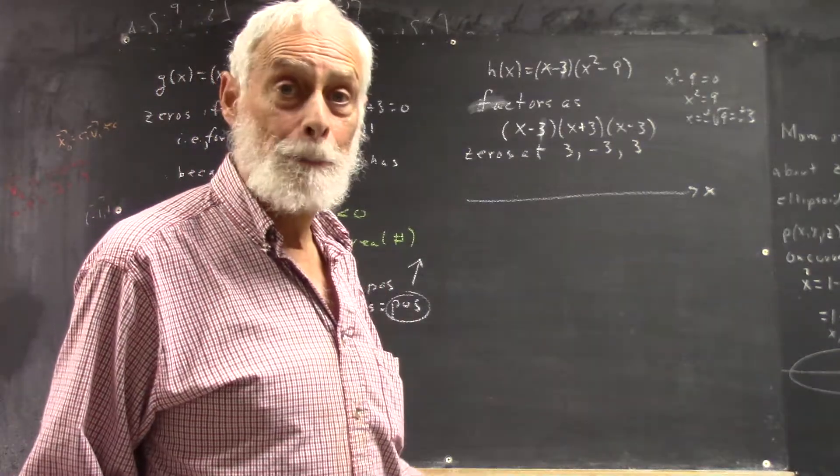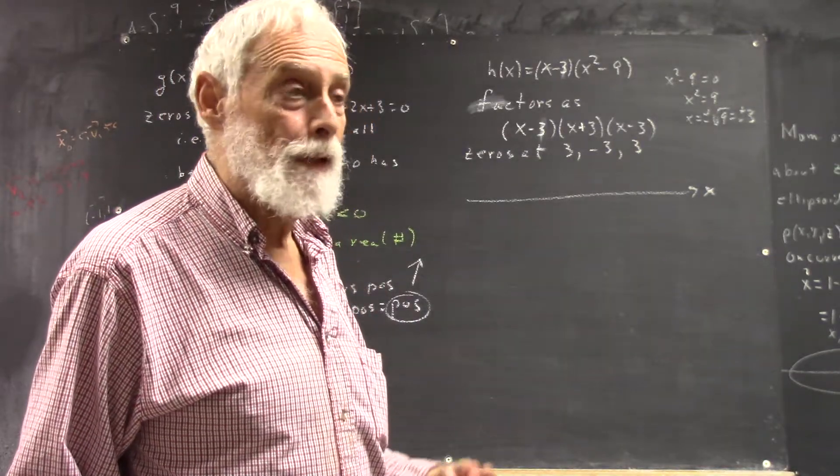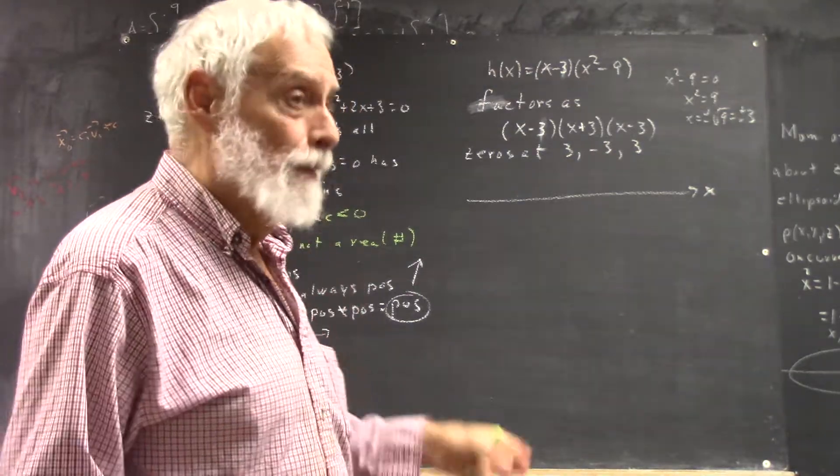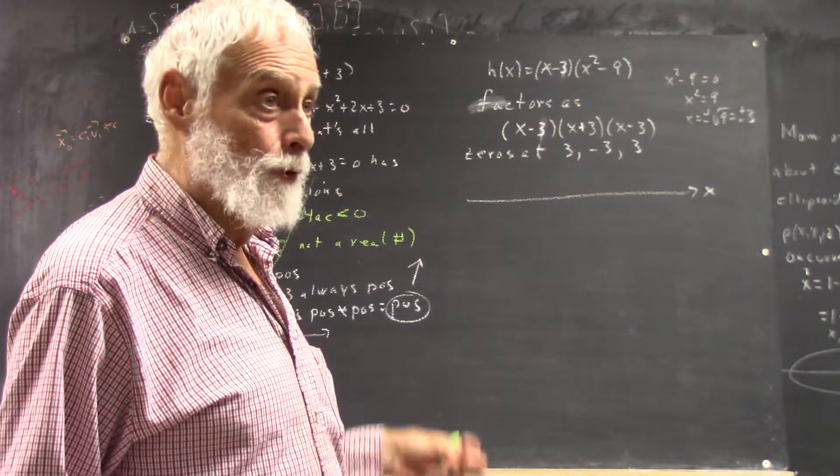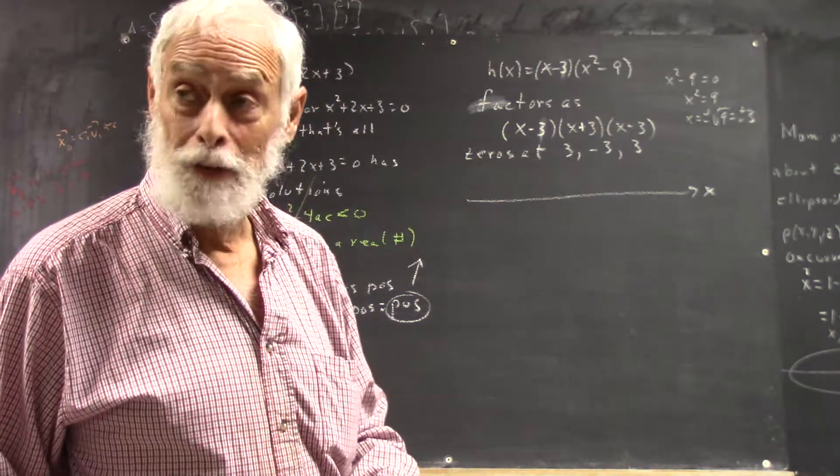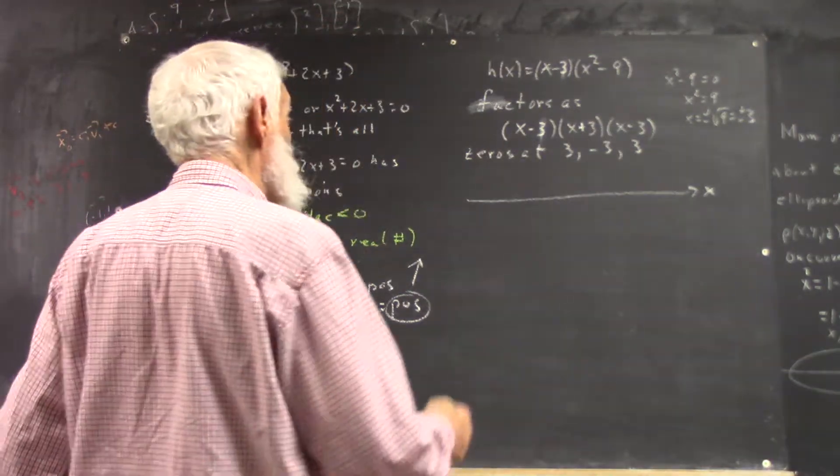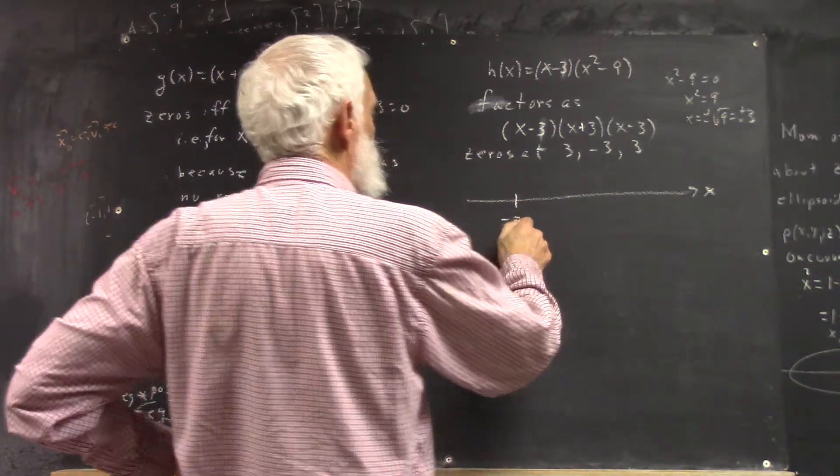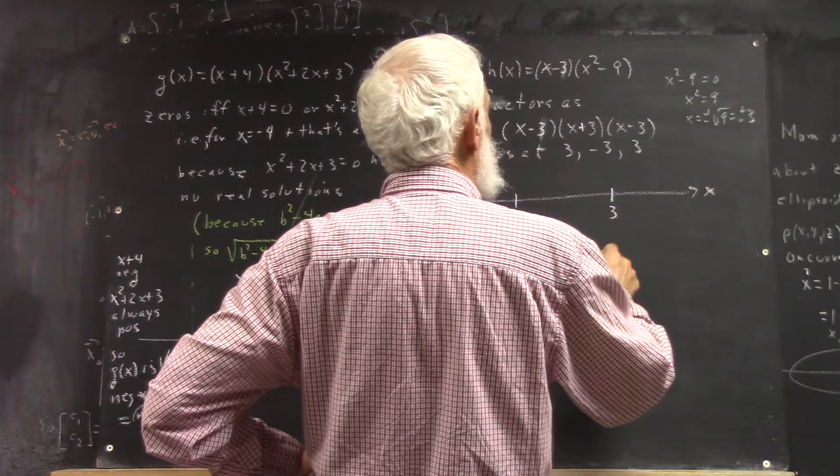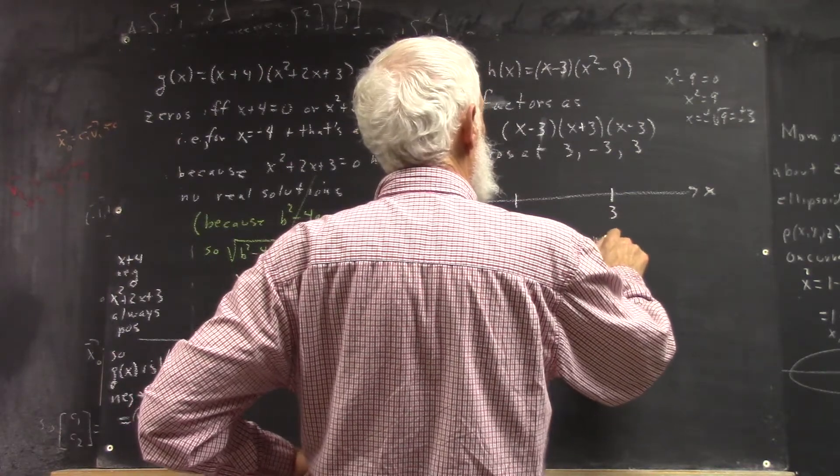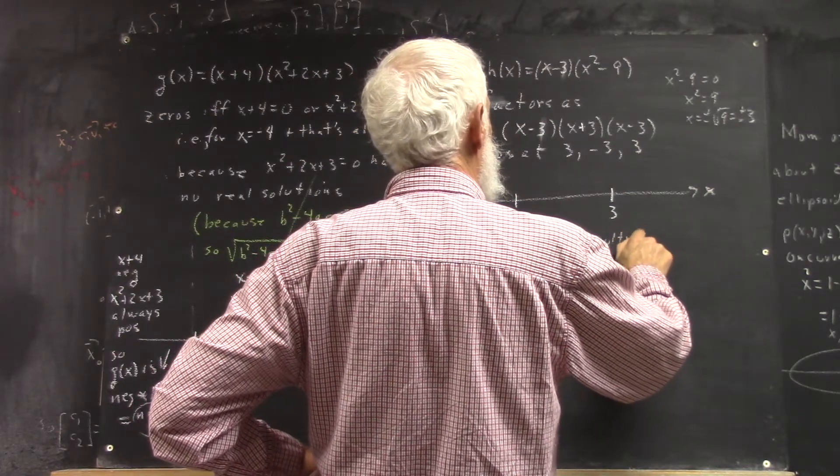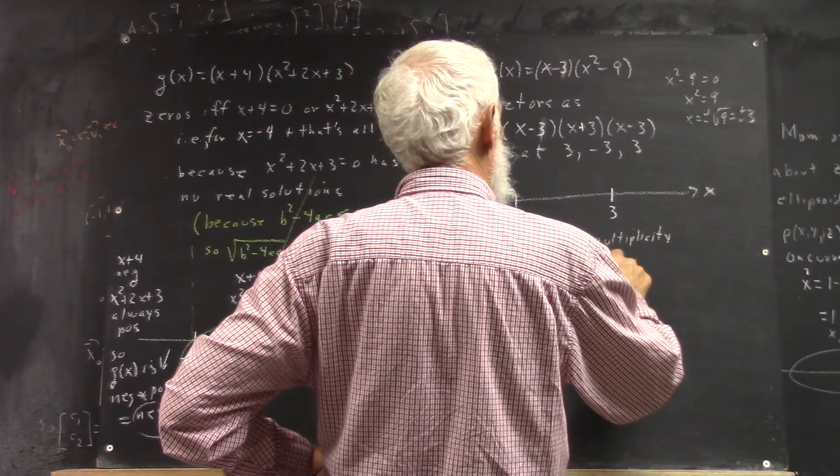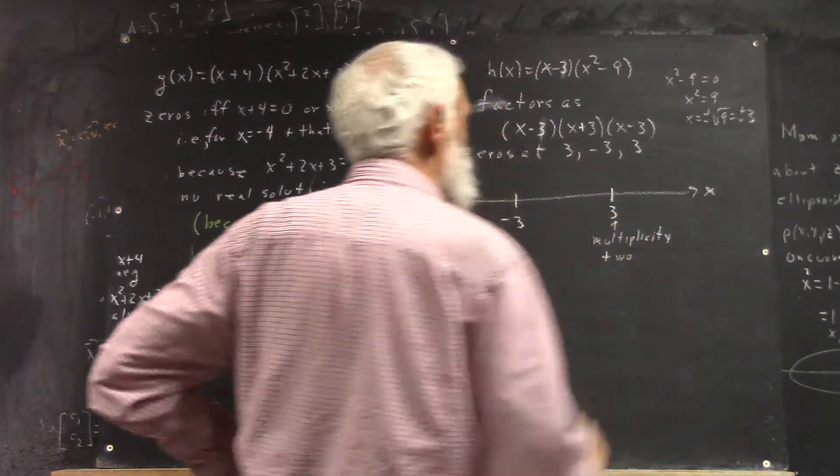We get 3 twice, right? And that actually turns out to be important, as we'll see. It does something that we haven't seen it do yet. The graph does something that we've not seen. So we've got negative 3, and we've got 3. And we say the multiplicity of the 3 is 2.